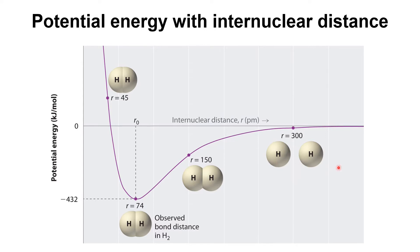When the two atoms are very far apart, the potential energy is zero. As they start coming closer, interactions begin — the electron of one hydrogen atom interacts with the nucleus of the other. Because of this attraction, the potential energy decreases. At an internuclear distance of 74 picometers, the potential energy reaches its minimum.